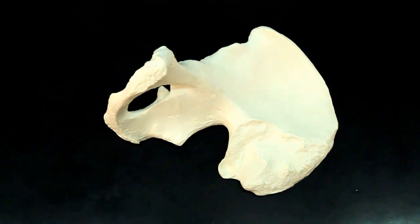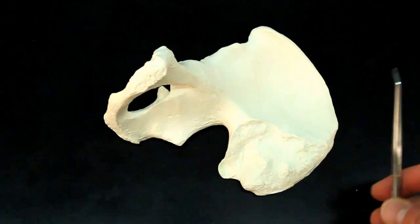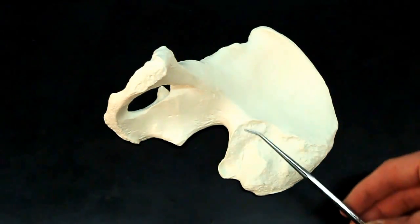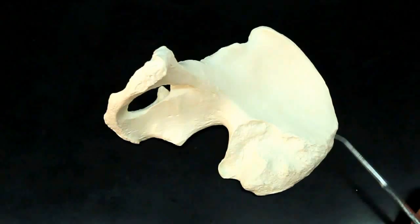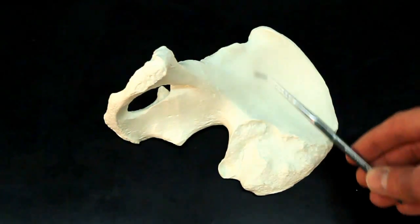This bone is a coxal bone. It's one of the three bones that make up your pelvis. Now this bone has three different regions to the one bone. We have the ilium region, watch out for the spelling, it's I-L-I-U-M. If you put an E in there, that makes it intestines.